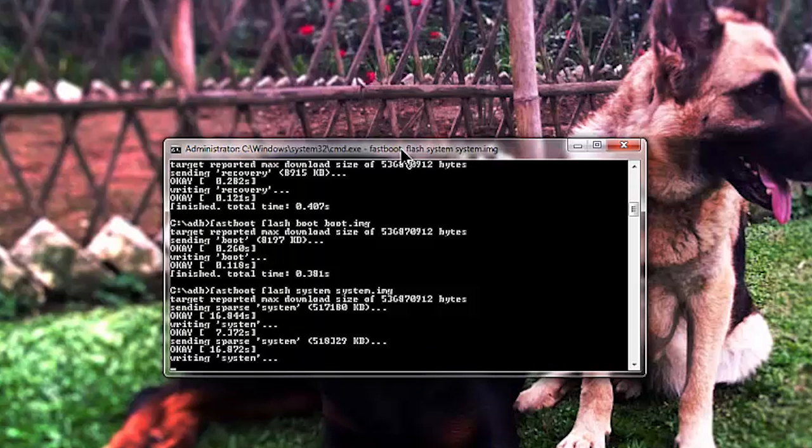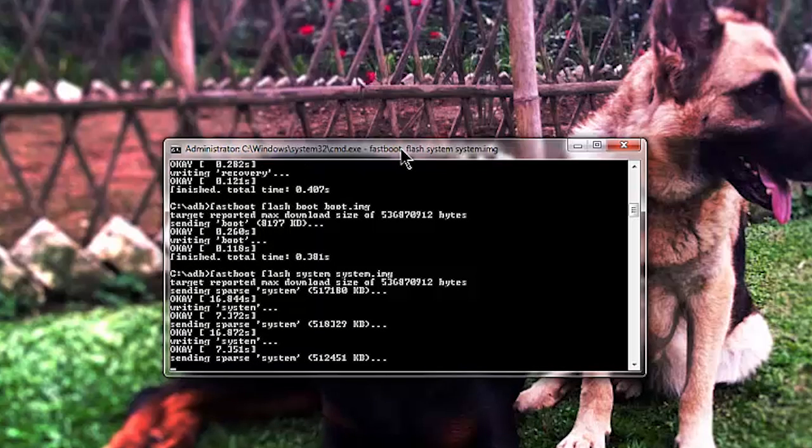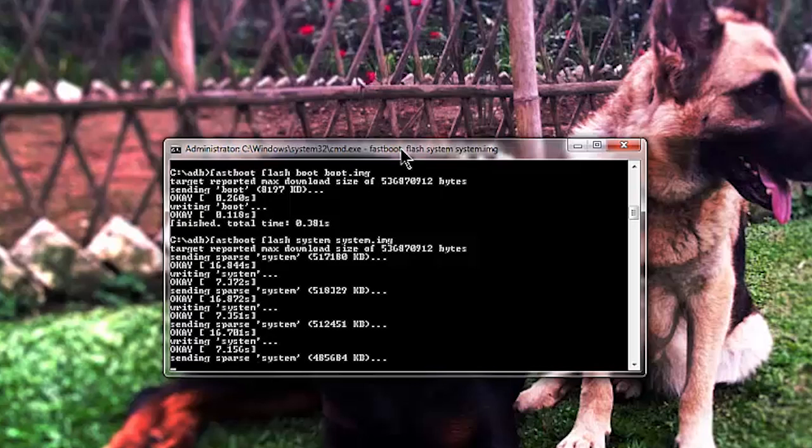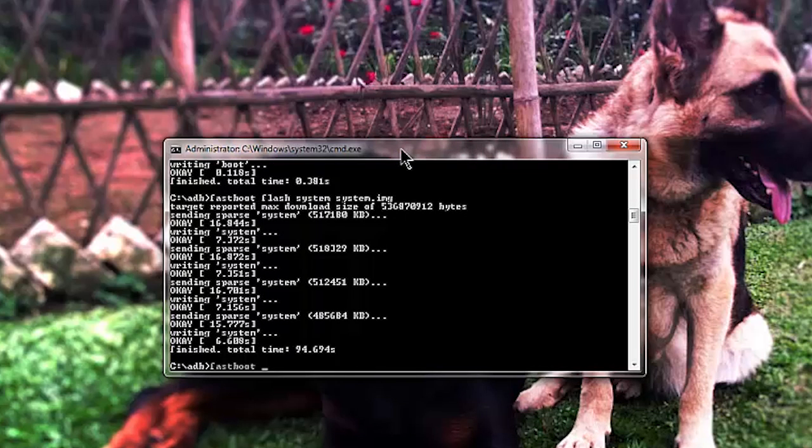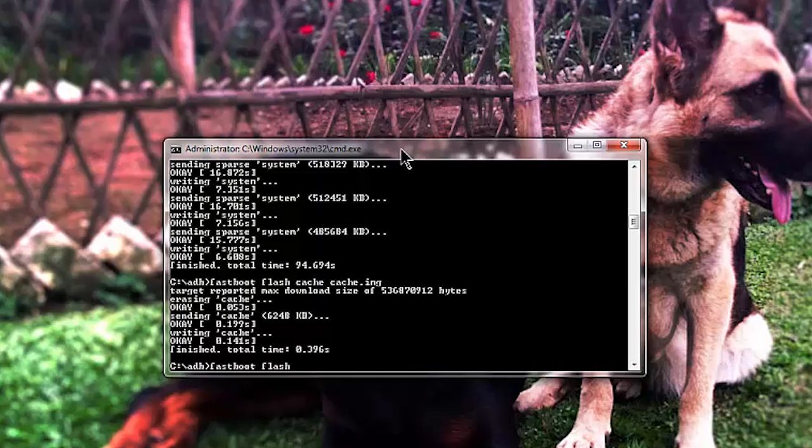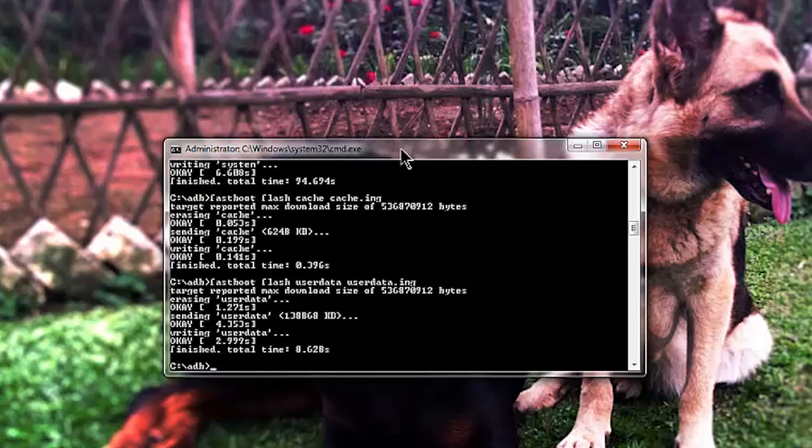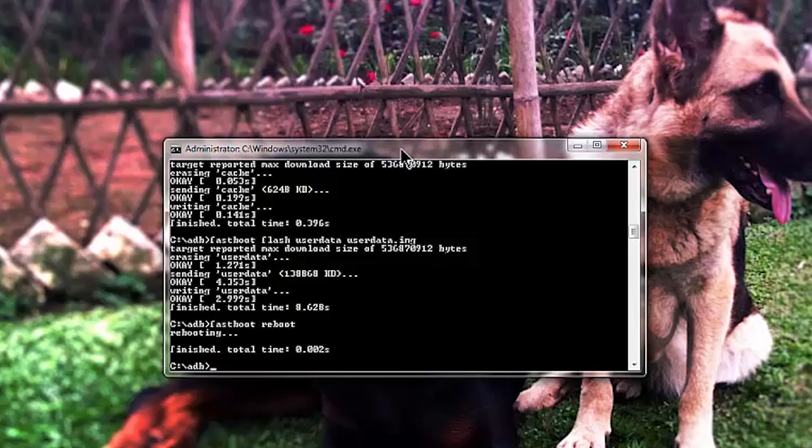I believe you have already flashed the five files that were required to be flashed manually because there was an error of system.img in the initial batch file or the script file that we ran. After you have successfully flashed all the IMG files, all you need to do is give a reboot command through the command prompt. For that, just type fastboot space reboot.